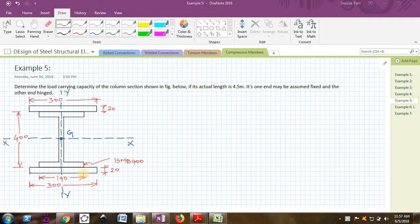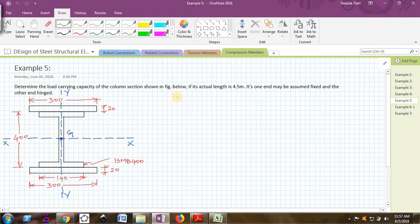In the first example we have seen how to find out for a single column, that is an I section, and here we will see how to find out for a built-up column. The problem description is: determine the load carrying capacity of the column section shown in the figure below if its actual length is 4.5 meter. Its one end may be assumed fixed and the other end hinged. This last sentence is given to find the value of k.